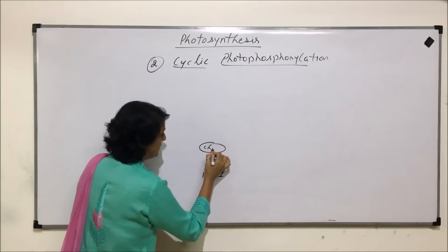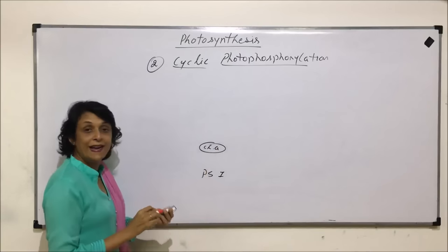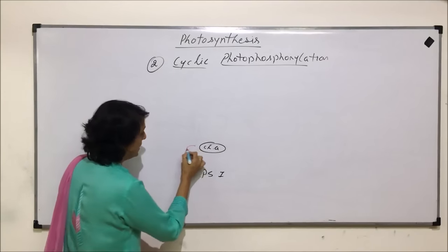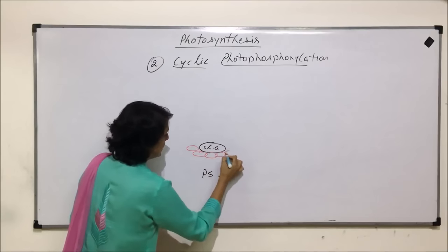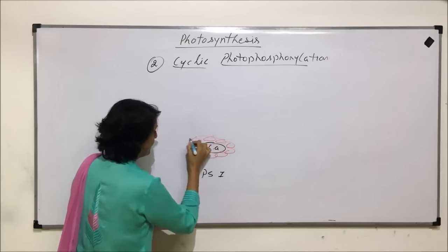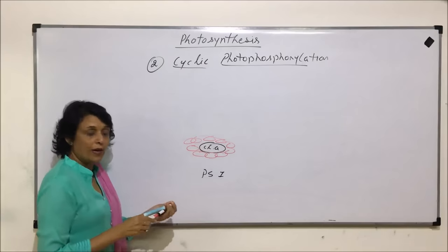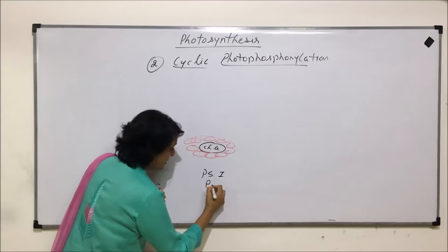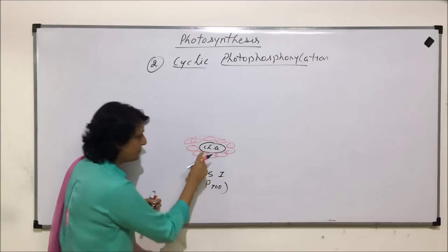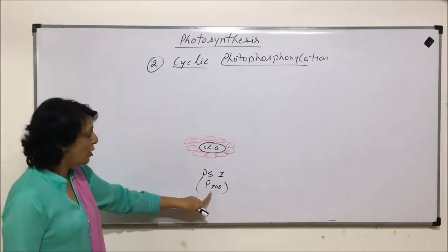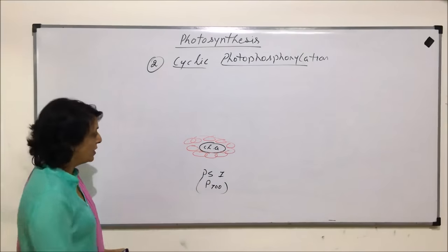Again, there is this reaction center chlorophyll A and around it are these accessory pigments. And as we know in PS1, it is P700. That means this chlorophyll A absorbs 700 nanometers.